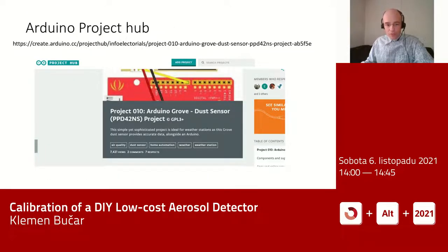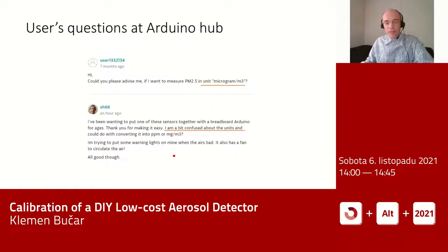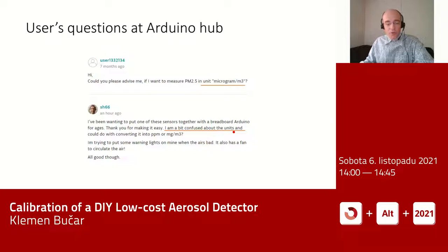This sensor is quite popular — it was one of the first on the market, so there are many projects online, including one at the Arduino Project Hub that describes in detail how to connect and program it. But the manufacturer does not give enough answers to key questions. For example, people ask: how do I use the unit micrograms per cubic meter for this? When you get the voltage out of such a sensor, converting it to a metrological unit is the most difficult part of the job.